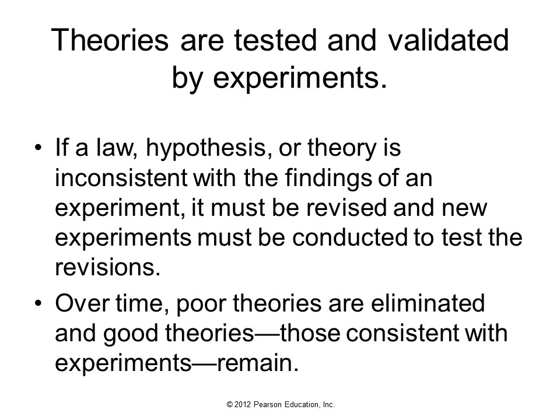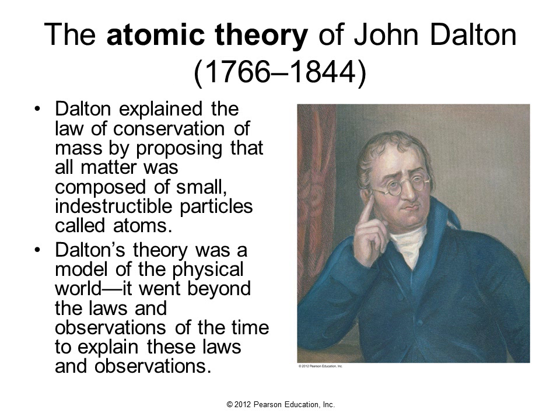Theories are tested and validated by experiments. Over time, poor theories are eliminated, and good theories — those that are consistent with experiments — remain. This is how scientists arrive at truth. An important theory in this chapter is atomic theory, proposed by John Dalton. Dalton explained the law of conservation of mass by proposing that all matter was composed of small, indestructible particles, and that when chemical reactions occur, it is simply a rearrangement — a change of bonding to make new molecules. Dalton's theory went beyond the laws of observation of the time to explain these and many other observations.